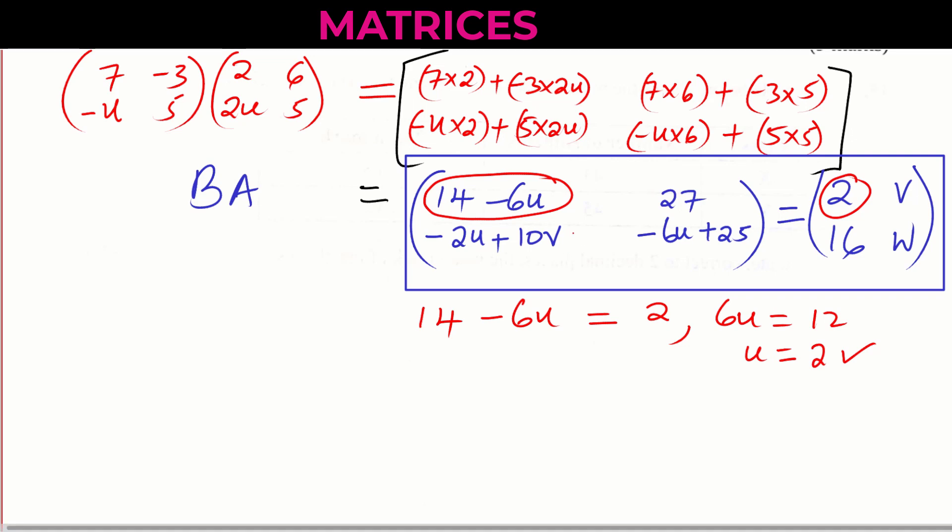Then this one, 27. This one is equal to V. So 27 is equal to V. So already, you've already got the value of V, which is 27.